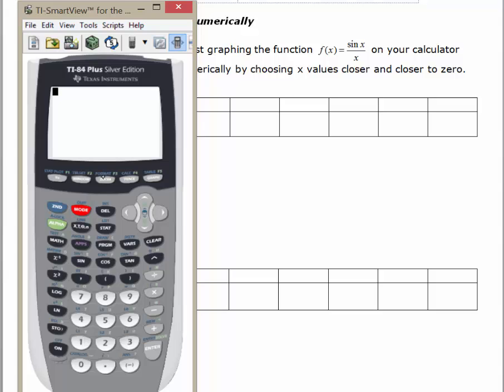And in order to graph that, I'm going to do a zoom trig, which is a zoom 7. So you can either arrow down to 7 and hit enter, or you can just hit zoom 7. And so here is the graph of sin(x) over x.